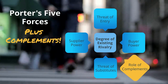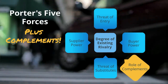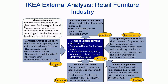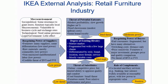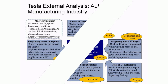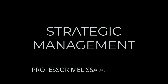And now you know how to do an analysis with Porter's Five Forces plus complements. Just for fun, here's an analysis of the retail furniture industry from the perspective of Ikea — you can screenshot it and go through it at your own speed. And here's one of the auto manufacturing industry. If you have any questions, just post them in the comments and I'll try to get back to you. If you enjoyed this video or found it useful, please hit like and subscribe to get updates on future videos. Thanks.